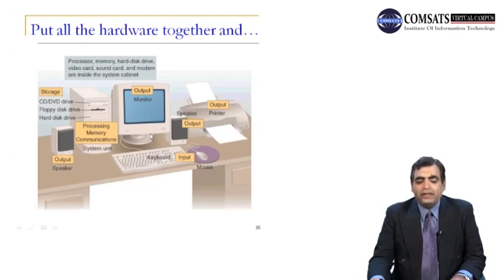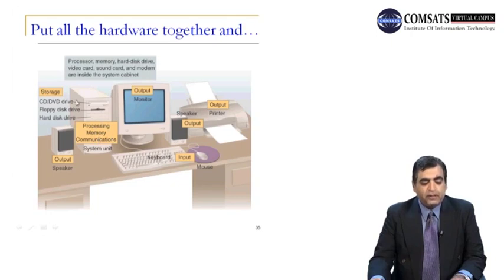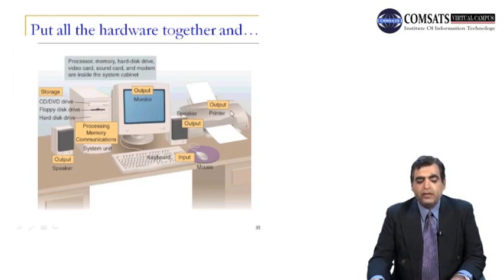Now let's put all this hardware together and we have the computer system. You can see the CPU or the processing and memory — the communication system unit is inside. We have storage such as the CD, DVD drive, floppy disk, and we have the hard disk. We have the monitor, keyboard as input, mouse as input, and speaker as output. Inside the system cabinet we have the processor, memory, hard disk drive, video card, sound card, and modems.